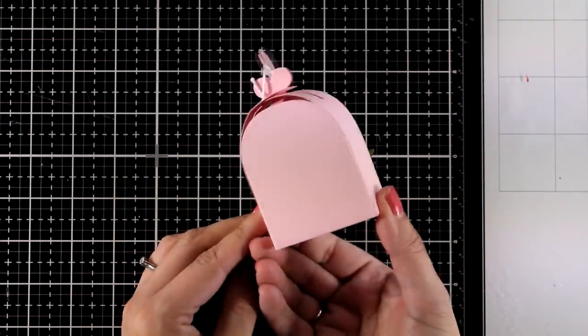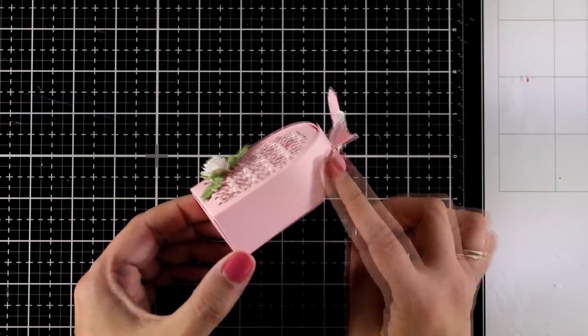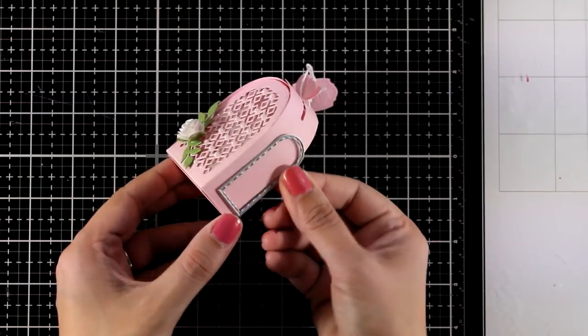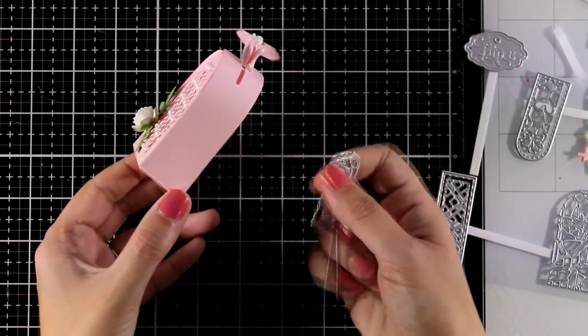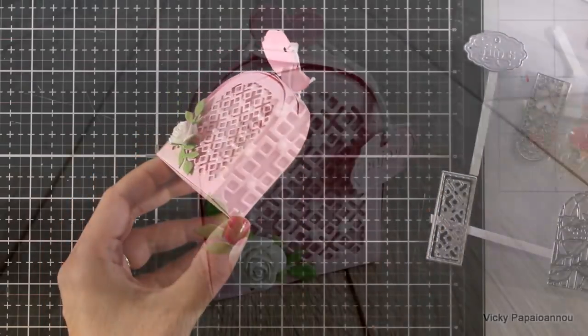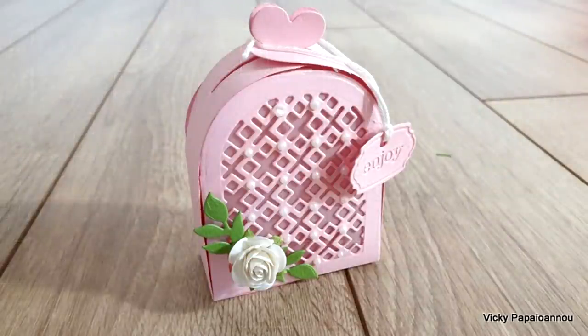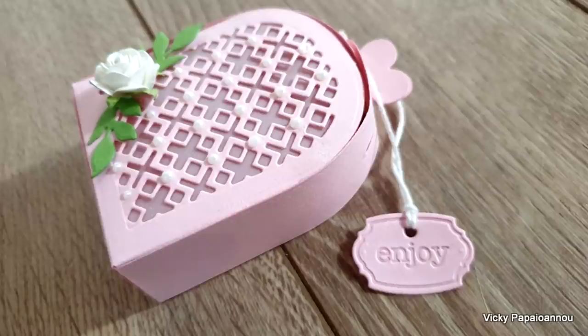So here is the first little box that I created super cute and adorable and remember that you can go a step further and embellish the sides or even the bottom and the back if you want to. Here are some close-up photos on this little box and notice how readable the word enjoy is on the tag although it is just embossed.